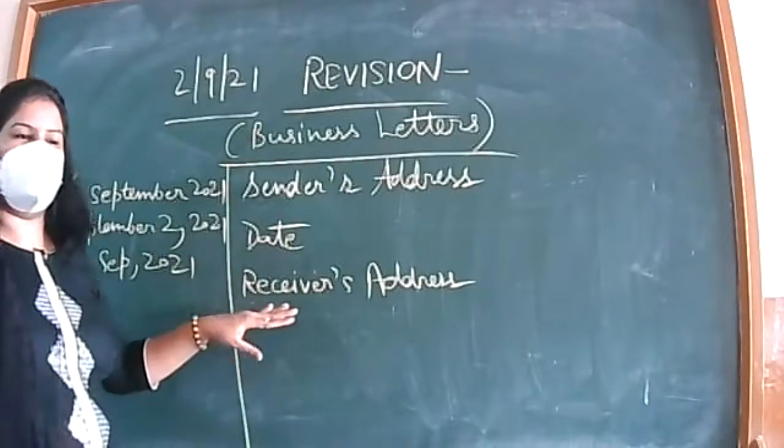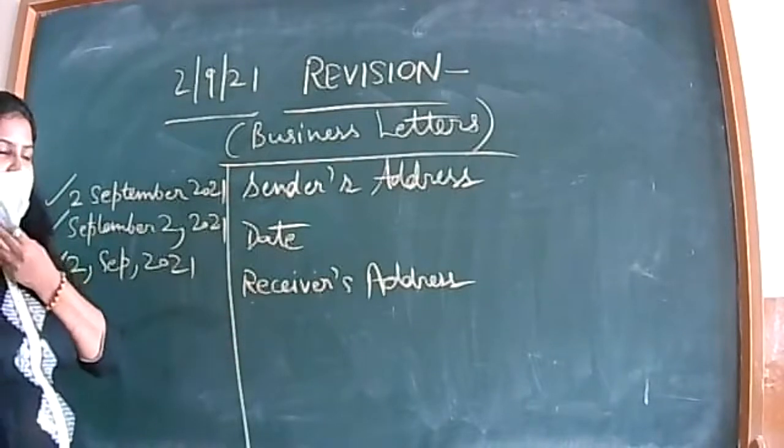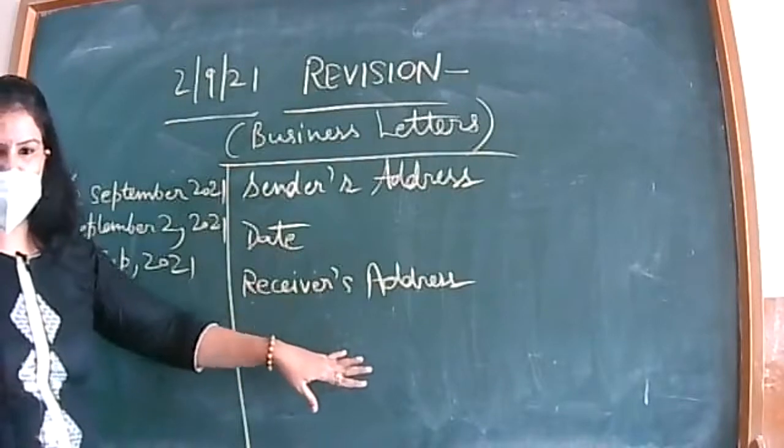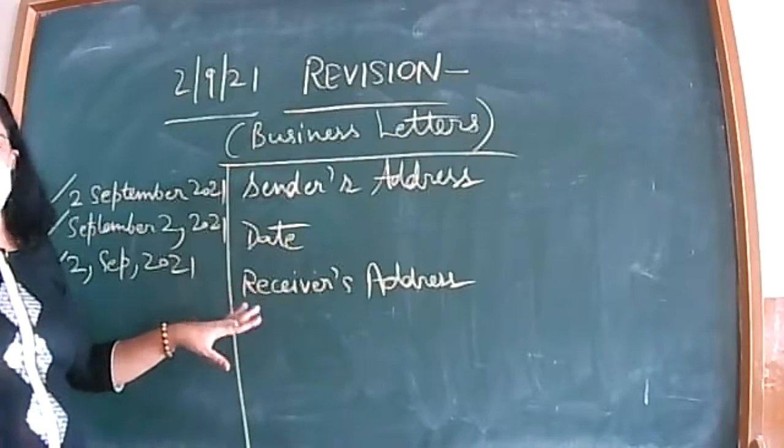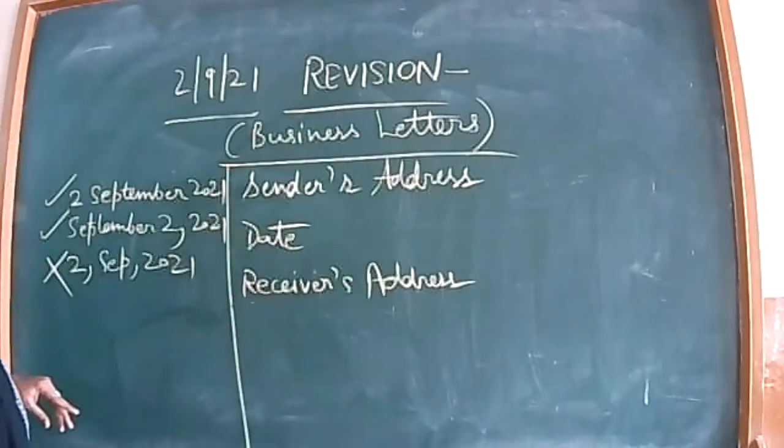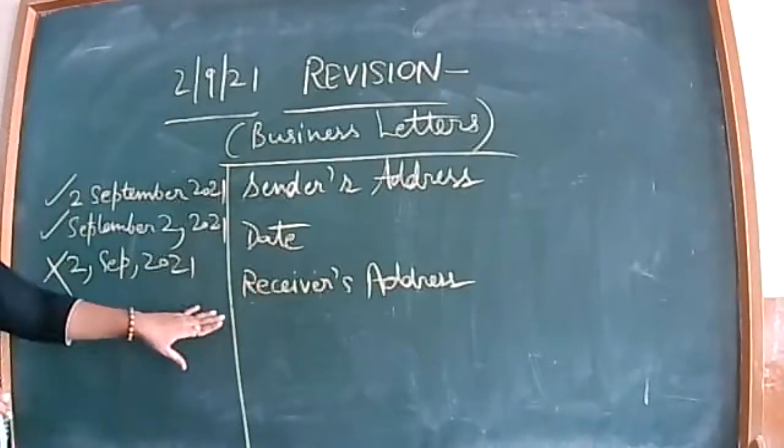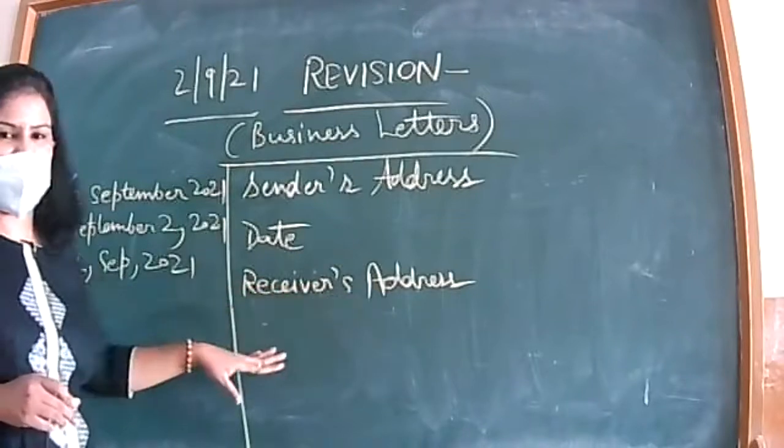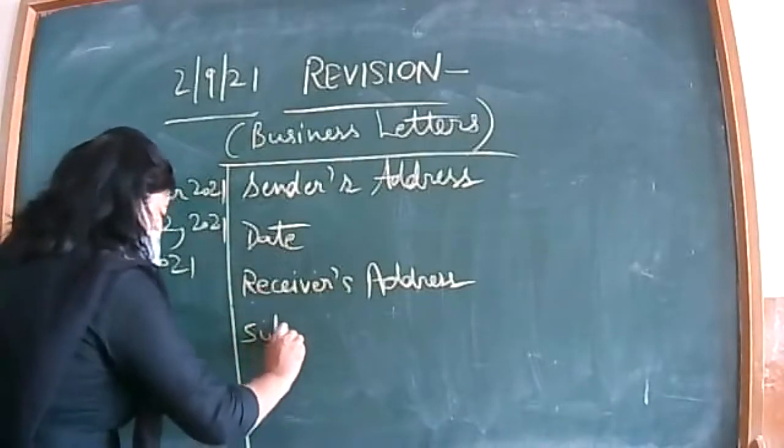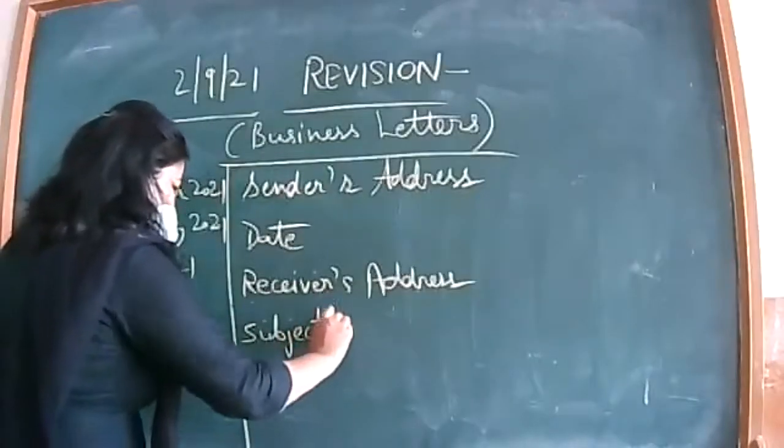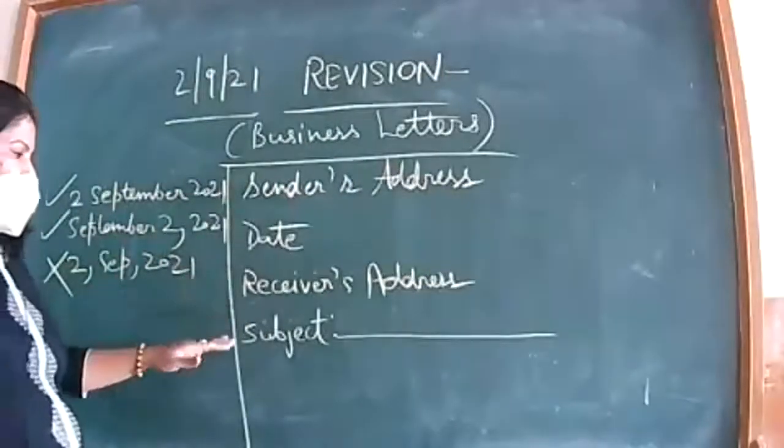Then skip one line. Recipient will be the manager or director of the academy. Write a letter to the director asking about something, so recipient is the director. It depends to whom you are writing, but one recipient must be there. If it is not there, you have to invent in subjective. Receiver's address is usually a two or three line address. Recipient, the address, and the city. Then again, you skip one line. Then you write subject.